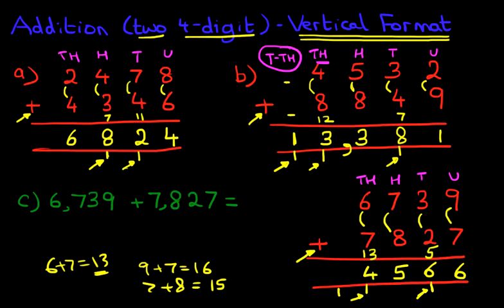And the same as in example B, we've got the new column which is ten thousands. We've got zero ten thousands here, zero here, but we have got one here. So the answer to our question is fourteen thousand five hundred and sixty-six.